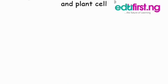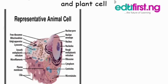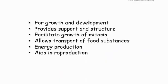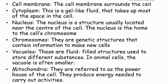Diagrammatic representation of animal and plant cell. This is an animal cell and this is a plant cell. Functions of cell: Number one, cells are responsible for growth and development. Number two, they provide support and structure. Number three, they facilitate growth through mitosis. Number four, they allow transport of food substances. Number five, they are responsible for energy production. And number six, they aid in reproduction.